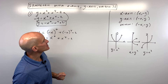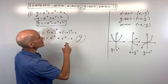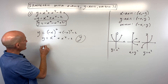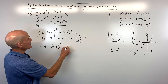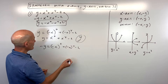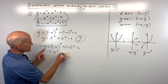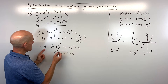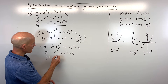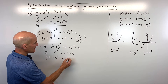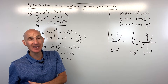Now for the origin test, we're going to make them both negative — replace y with negative y and x with negative x. Negative x to the sixth is positive, positive x to the fourth, and negative y. Multiplying through by negative one, we're not getting the original equation back. So it looks like it's just y-axis symmetry in this case.